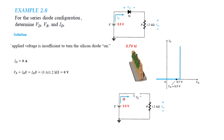The diode will behave like an open circuit, so no current will flow. Writing the KVL equation: minus E plus VD plus VR equals 0. Plugging in values, VR is 0, so VD equals E, which is 0.5 volt.